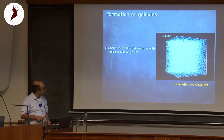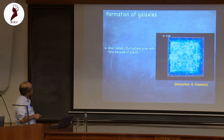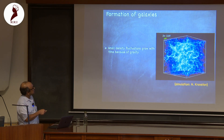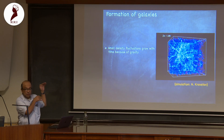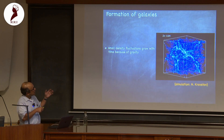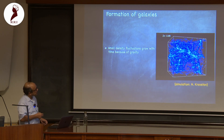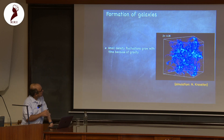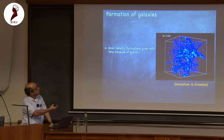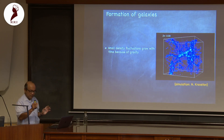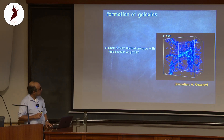This simulation shows the process: z represents redshift, and decreasing z means going forward in time. Small density fluctuations increase in contrast and amplitude, and structures that we see today in the galaxy map emerge just out of gravity. It's a comoving volume — the expansion of the universe has been taken out — to make the structures easier to see.